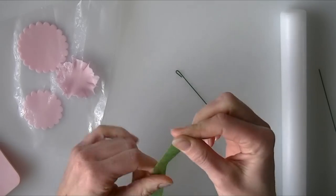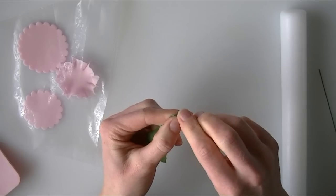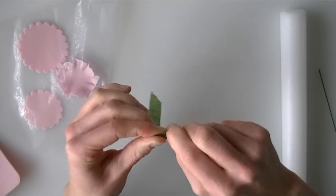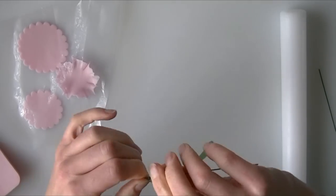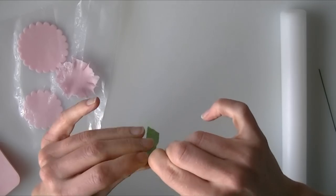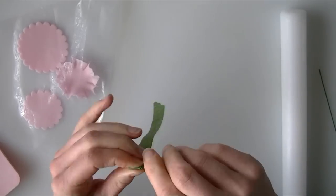Now I have got a bit of florist tape and I am just going to wrap it around that hook that I have made at the end of my wire, so I am going to pull it round tight. It just makes it easier when I am putting my petals on if they have got something for them to stick to.